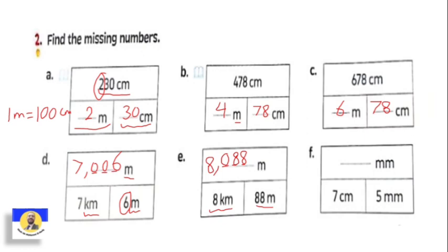Letter f: centimeters to millimeters. Centimeter to millimeter is one step, so multiply by ten only. Seven point five centimeters: seven goes to tens, and the next digit five follows. So the answer is seventy-five millimeters.